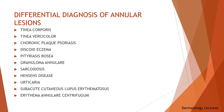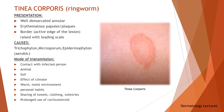The differential diagnosis of annular lesions includes tinea corporis, tinea versicolor, chronic plaque psoriasis, discoid eczema, pityriasis rosea, granuloma annulare, sarcoidosis, Hansen's disease, urticaria, subacute cutaneous lupus erythematosus, and erythema annulare centrifugum. I will discuss all of these lesions briefly so that you can easily diagnose an annular lesion.